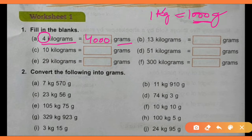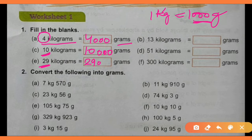1000 में तीन zeros आती हैं। तो अब जो भी number kilogram का होगा, जैसे 10 kilogram है, तो आप पहले 10 लिखिए और उसके आगे three zeros put करेंगे — means 10,000 grams। और अगर 29 kilograms हैं, तो 29,000 grams। हम 29 को thousand से multiply कर रहे हैं।